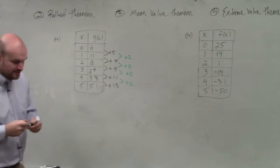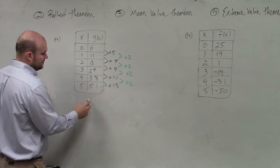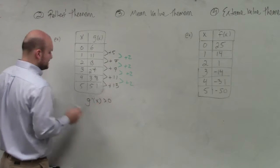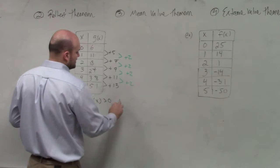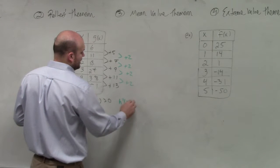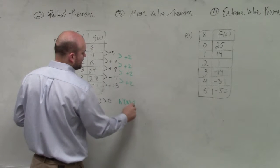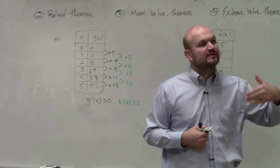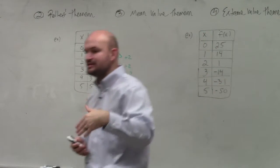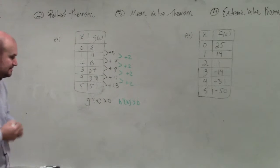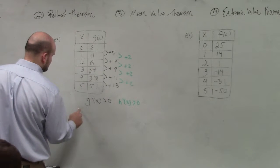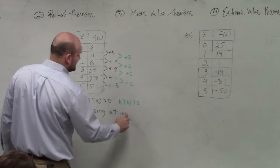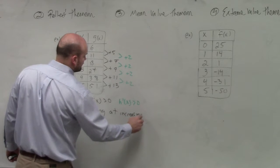Would you guys agree with me? So what I can say here is g prime of x is greater than 0, and h prime of x is greater than 0. The main important thing I want you to say is, since the first and second derivative is increasing, what we can say is the graph is increasing at an increasing rate.